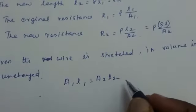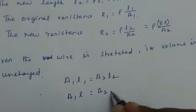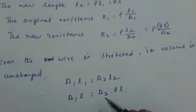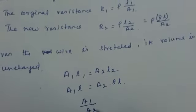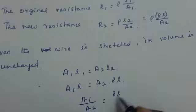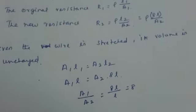So you know L1 and L2. A1 into L is equal to A2 into 8L. Now, you can write here A1 by A2 is equal to 8L by L which is equal to 8.